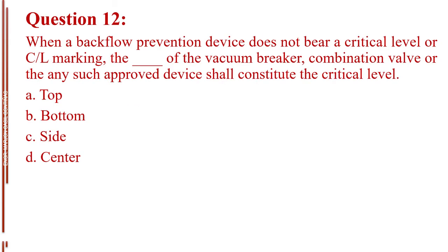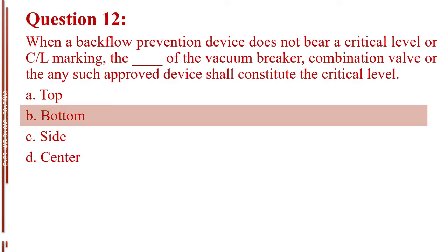Question number 12. When a backflow prevention device does not bear a critical level or CL marking, the blank of the blank of the vacuum breaker, combination valve, or any such approved device shall constitute the critical level. Letter A, top. Letter B, bottom. Letter C, side. Letter D, center. The answer is Letter B, bottom.